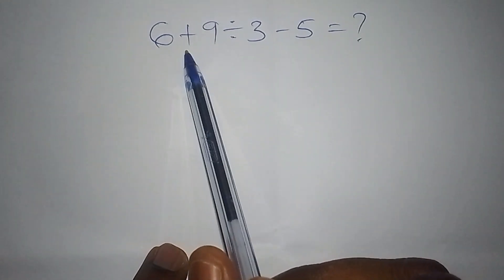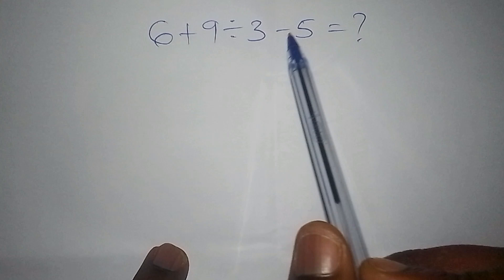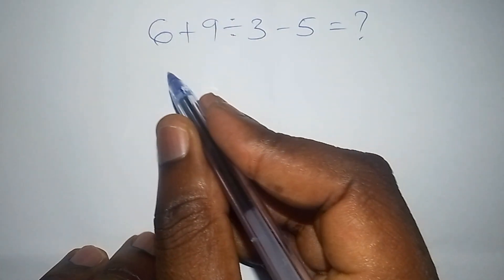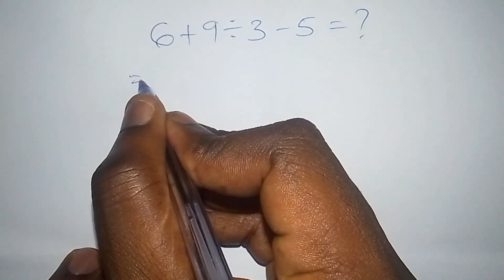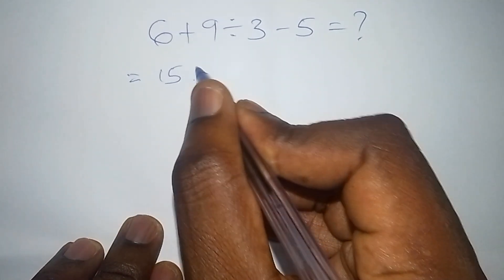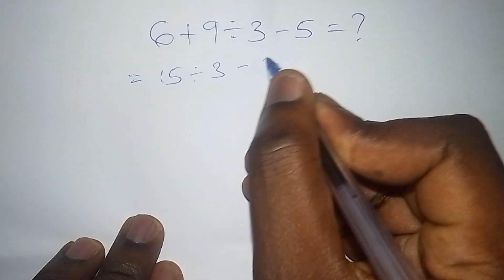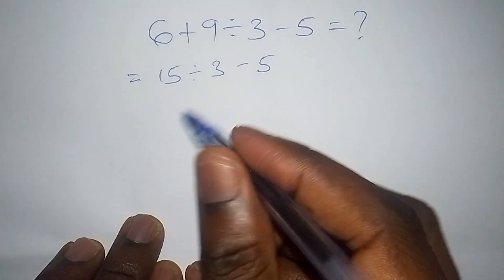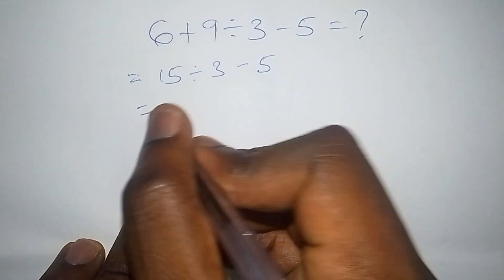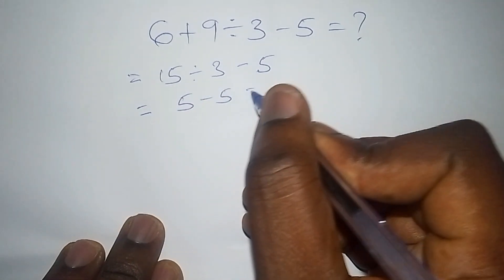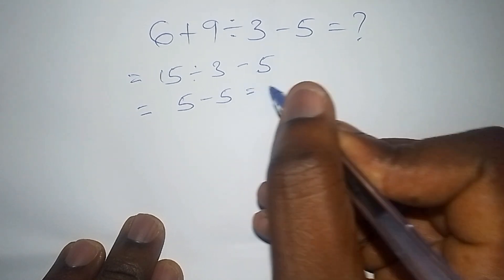We have 6 plus 9 divided by 3 minus 5. What you need not to do is, for example, work it directly. Like you can say that 6 plus 9 is 15, then 15 divided by 3 minus 5. From there, when you pick 15 divided by 3, you might get the answer as 5, then 5 minus 5. Finally you shall arrive with your answer that is 0.